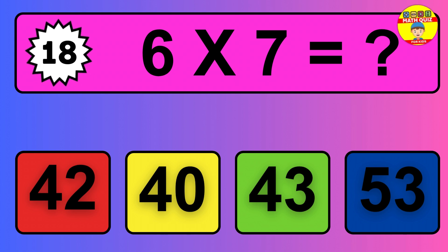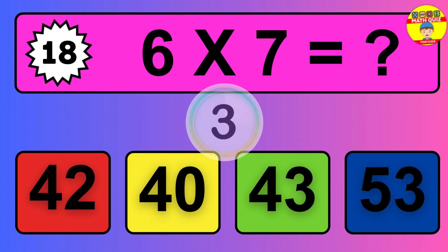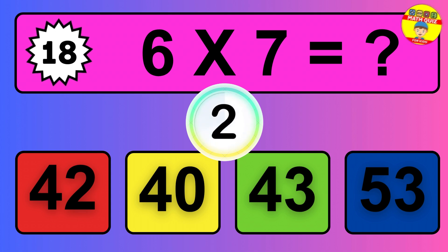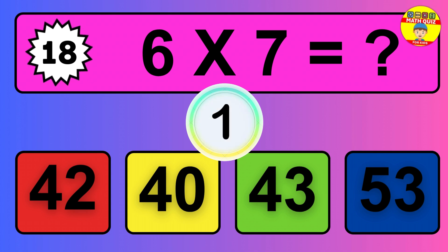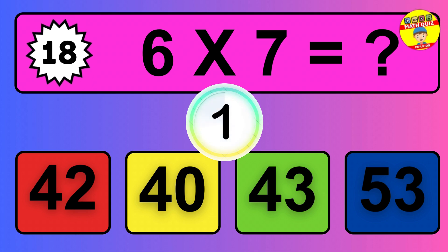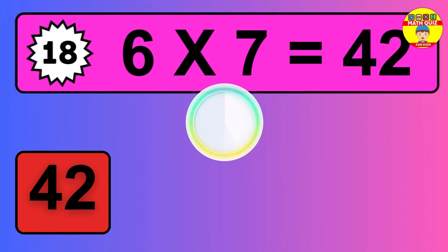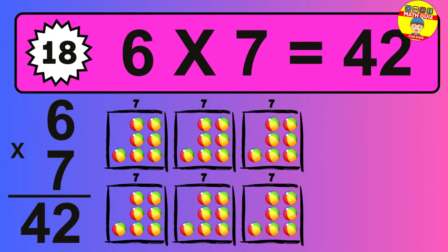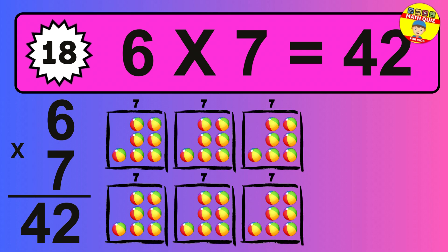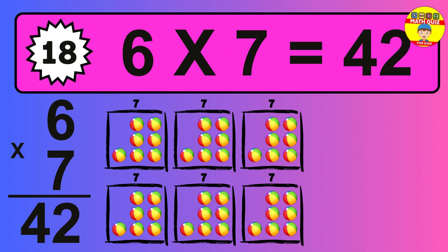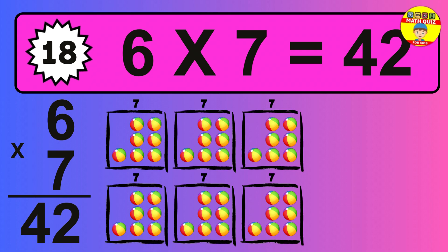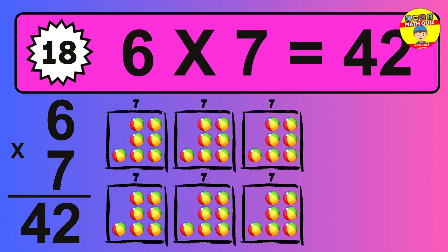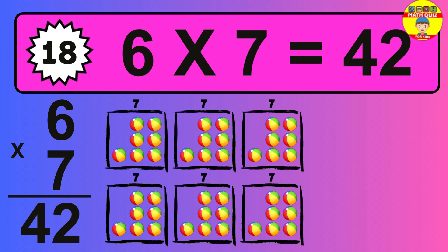Question 18. 6 times 7 equals what? So the answer is 6 times 7 is 42. To calculate, we have 6 groups with 7 balls each one. So how many balls do we have? 42 balls.